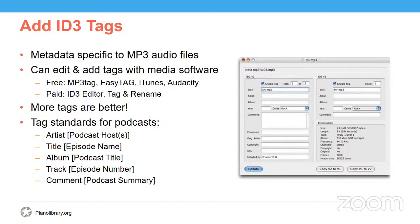ID3 tags were originally developed to describe the contents of a music audio file, not podcasts. Because of this, the tag fields available do not exactly correspond to the information relevant to podcasts. For example, there is an ID3 tag for an album and a track, but podcasts don't use those descriptors. ID3 tag standards for podcasts have been developed and adopted to reflect these differences. For example, you will use the artist field to list the podcast host, the title field to list the podcast episode name, and the album field to list the podcast title. There is also a URL tag field where you can link to the show notes web address. Since the foundation of podcasts are MP3 audio files, ID3 tags are crucial to podcasts and their preservation.